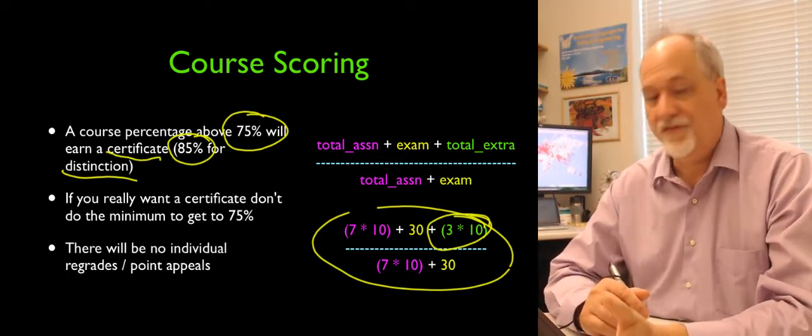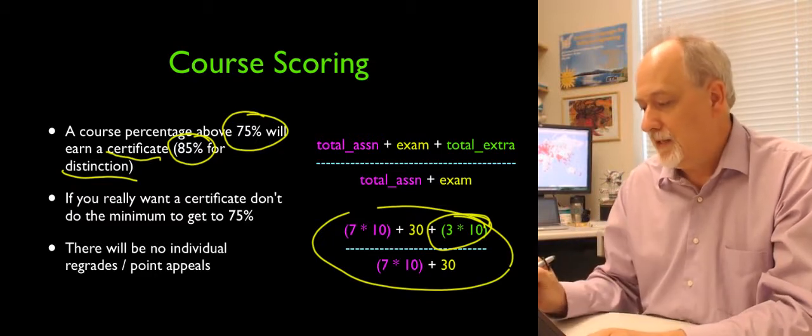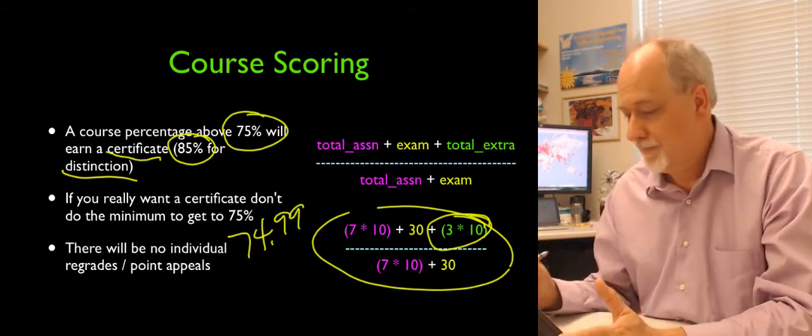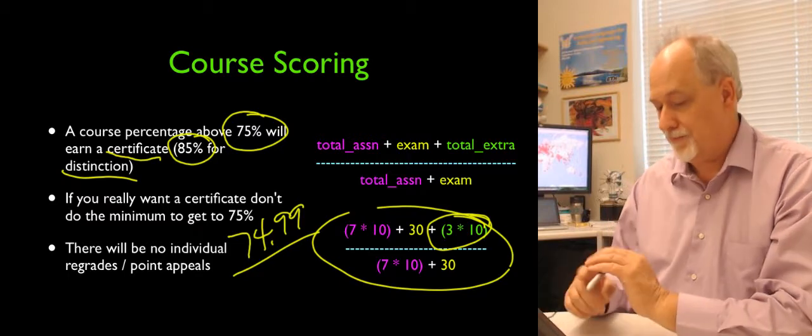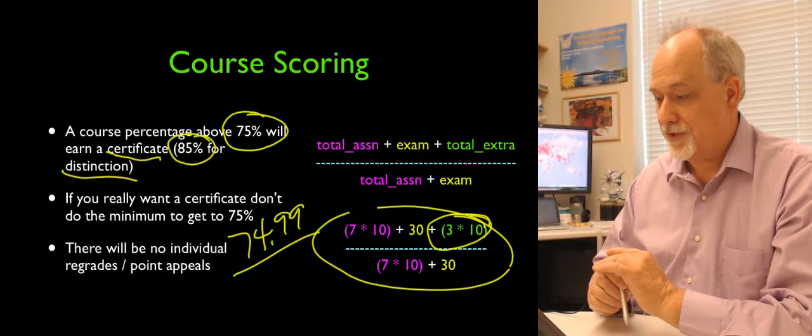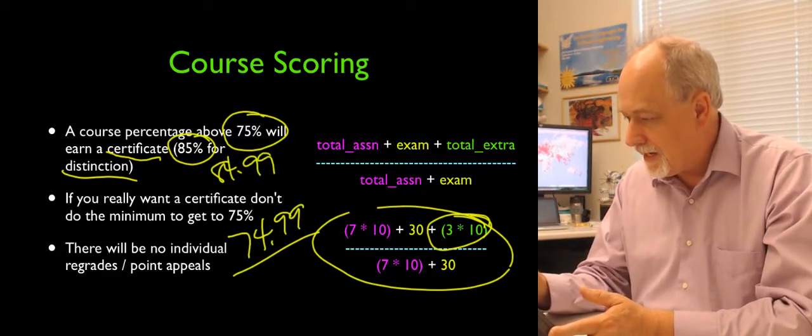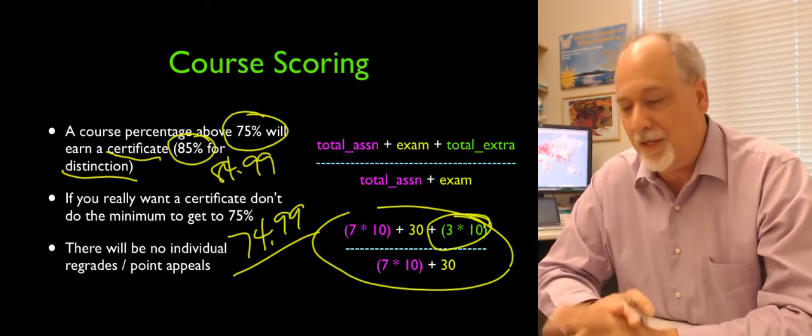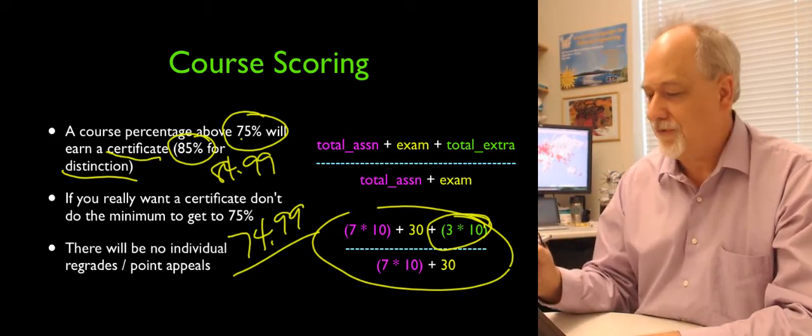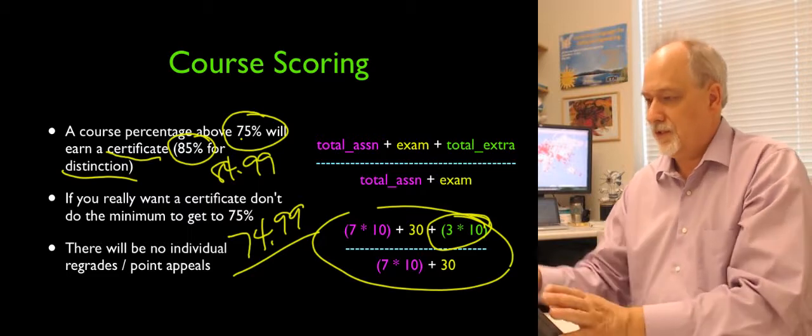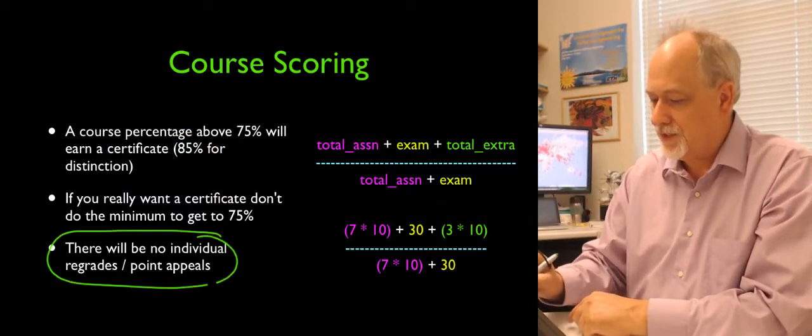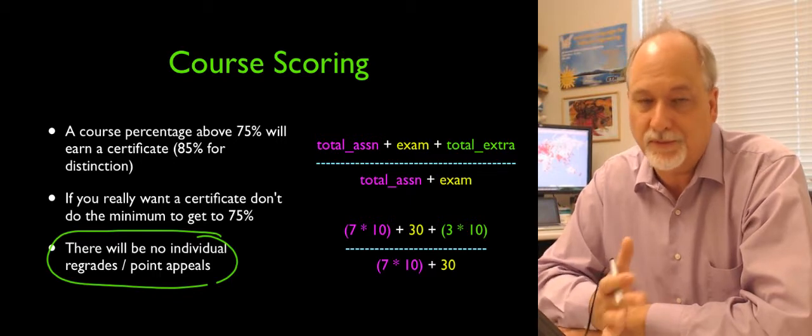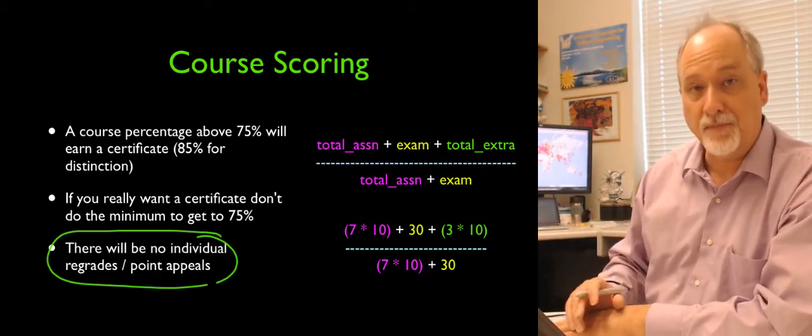Now, if you really want a certificate, don't plan on getting exactly 75% or 74.99% and then do a bunch of complaining. This is about learning. But if you want to get the certificate, don't shoot for the low level. Or the same thing. If you end up with 84.99, just earn the certificate, get the points, don't let it be close. So 75% for a certificate, 85% for a certificate with distinction. And there will be no individual regrades or point appeals. Or if you think your peers are completely confused and misgraded you, just do the next assignment. That's part of the reason that I made peer grading extra credit.